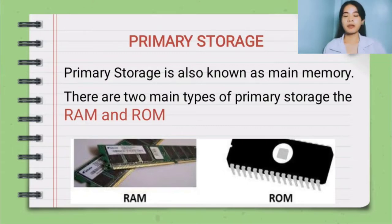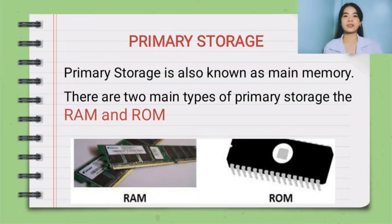Primary storage is also known as main memory. There are two types of primary storage: RAM and ROM.